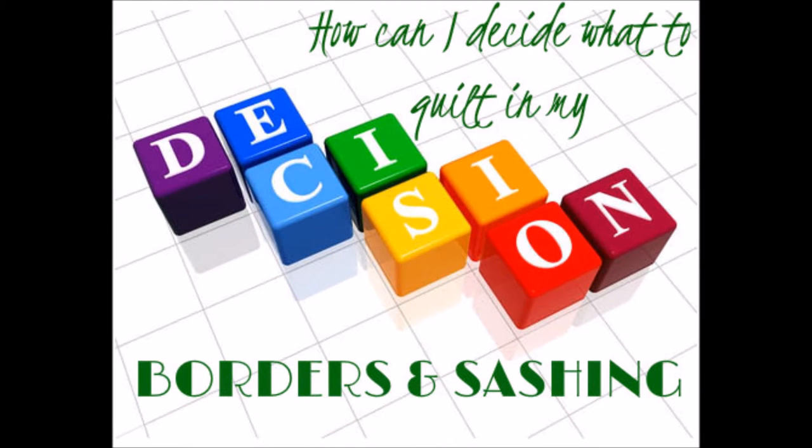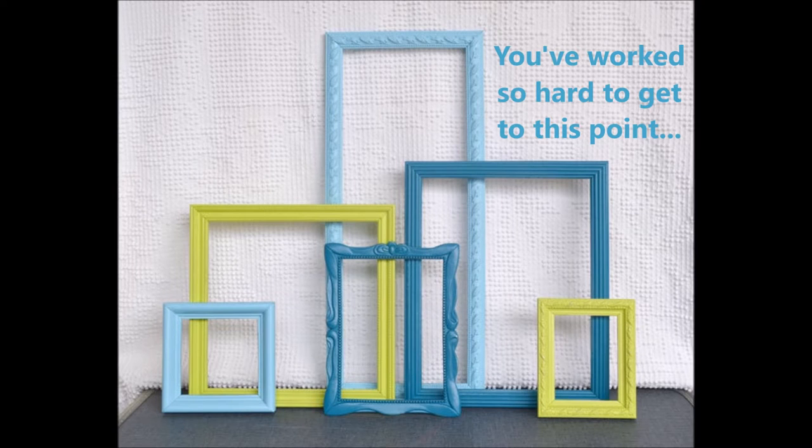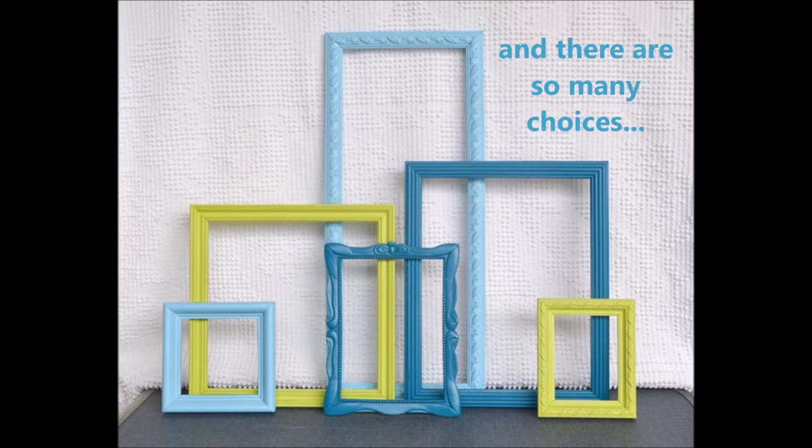One of the hardest decisions in quilt making is deciding what to quilt in your borders and sashings. You've worked so hard to get to this point, making sure all the points matched, stitching so far is all good, and there are so many choices to make. How do you decide?